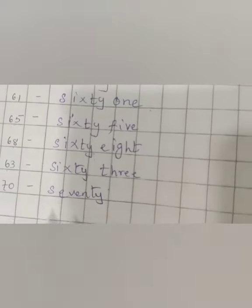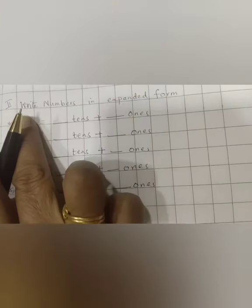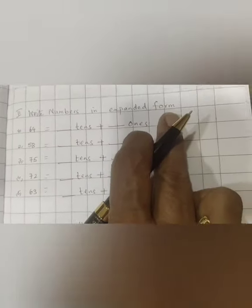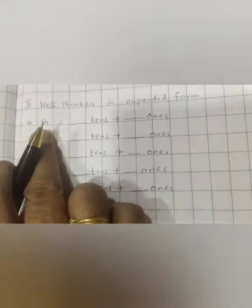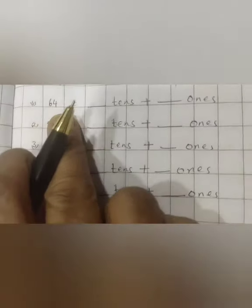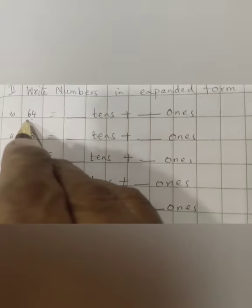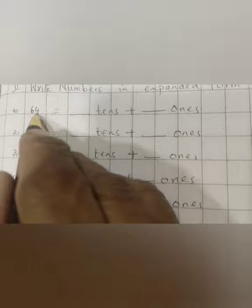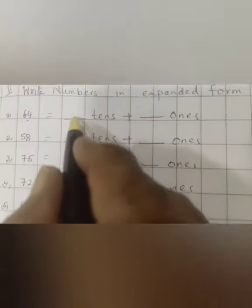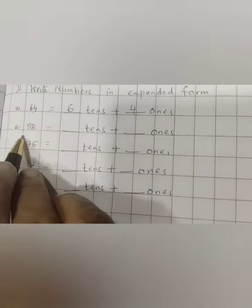Now next page. See children, what is this? Write numbers in expanded form. Did you all understand the expanded form? Yes. 64. 64, how you are going to write? 6 is in tens place and 4 is in ones place. So 6 tens and 4 ones equals 64. 58, how many tens and how many ones? 5 tens and 8 ones. 58.